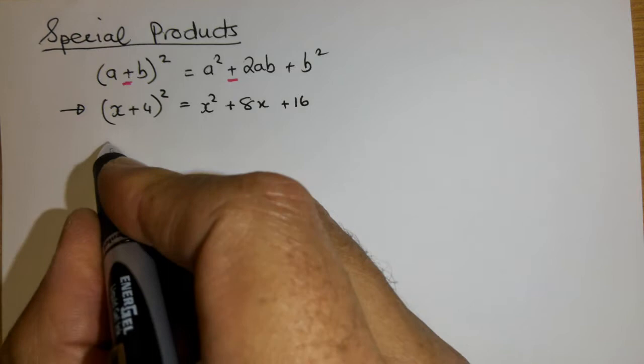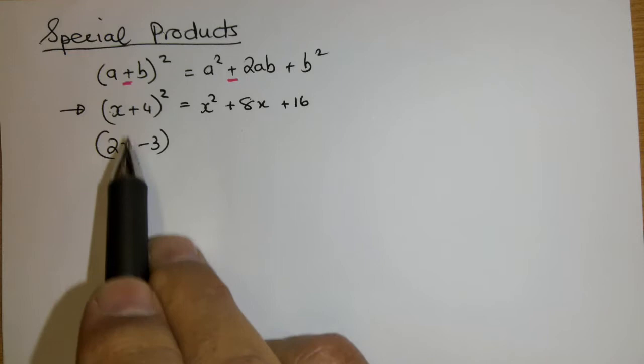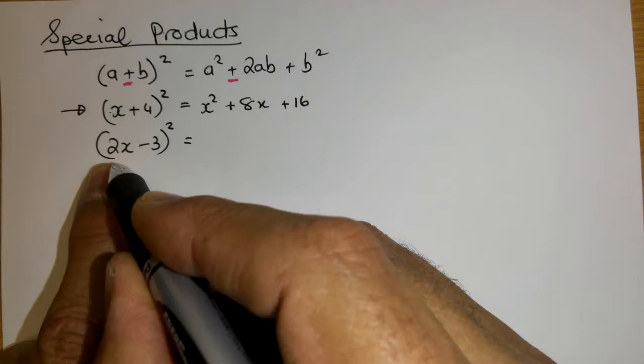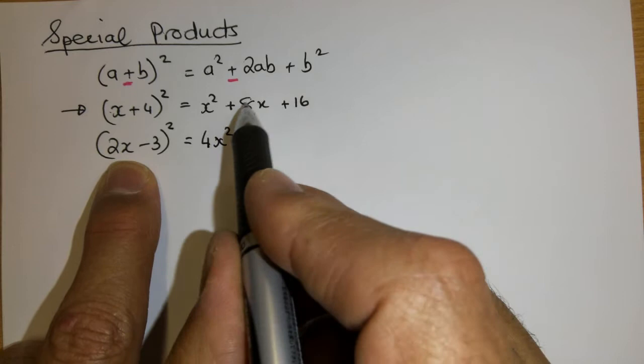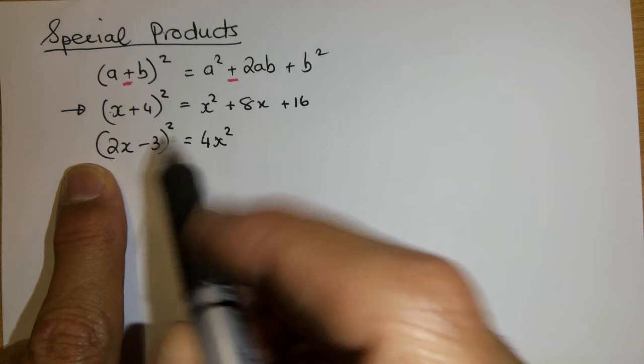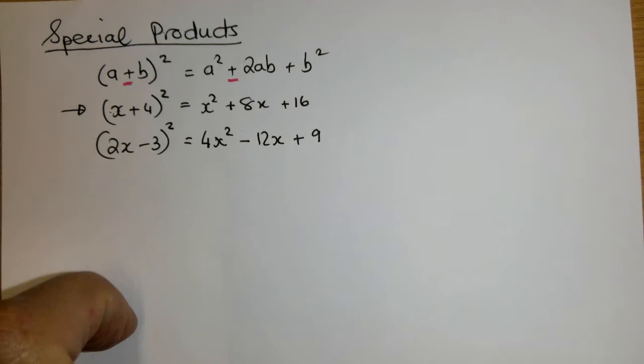Let's do one where the x has something in front and I'm going to change from a positive to a negative. What am I doing? I'm squaring this. So it will be the first term squared which is 2 squared which is 4, x squared. The middle term is 2 times minus 3 which is minus 6 times another 2 is minus 12x. This squared is what I add at the end. So 3 squared is indeed 9.